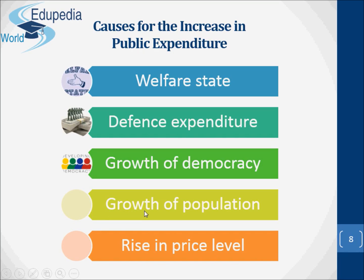Four, growth of population. Tremendous growth of population necessitates enormous spending on the part of modern governments. For meeting the needs of the growing population, more educational institutions, food materials, hospitals, roads, and amenities of life are to be provided. Five, rising price level. Rises in prices have considerably enhanced public expenditure in recent years. Higher prices mean higher spending on the part of the government on items like payment of salaries, purchase of goods and services, and so on.